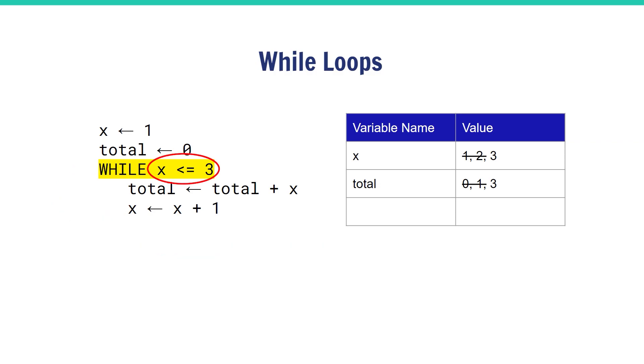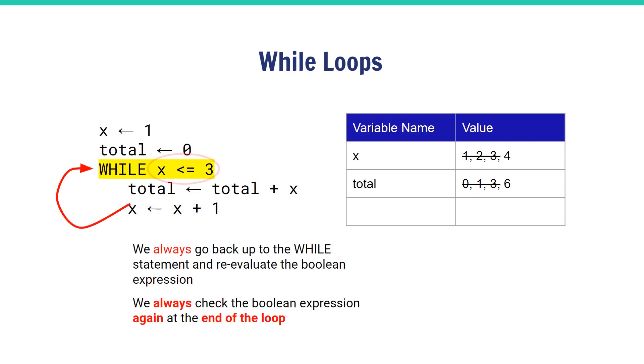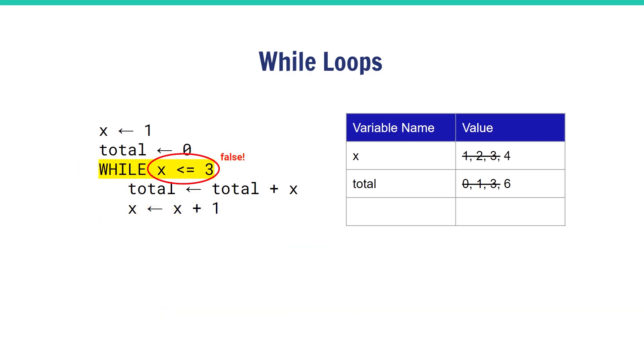We go back up and re-evaluate the boolean expression. This time x is still less than or equal to three, even though it's changed from two to three, so still true. We go back in and re-execute those two lines of code. We then check the boolean expression again, and this time we find that x is four. Four is not less than or equal to three, so it's false. At this point when it is false, we skip the indented block just like we did for if statements.